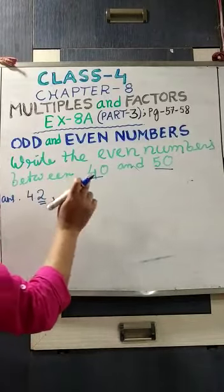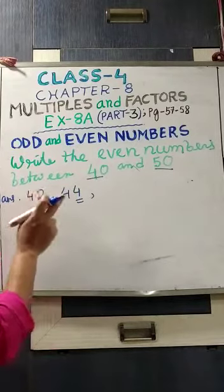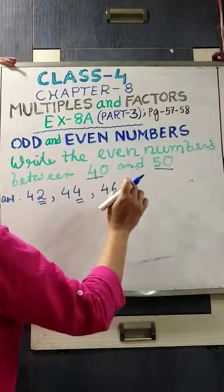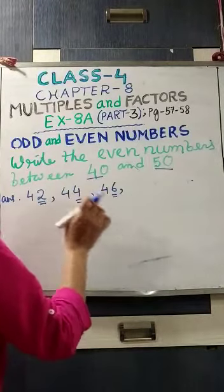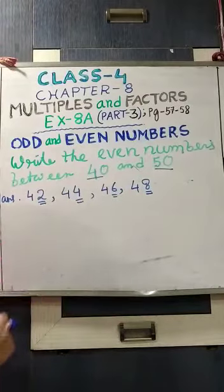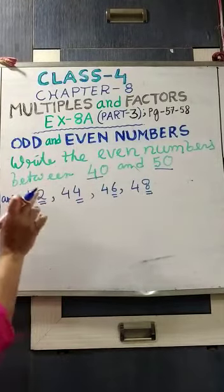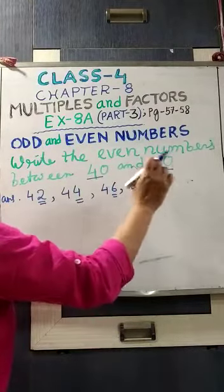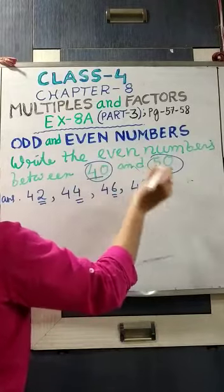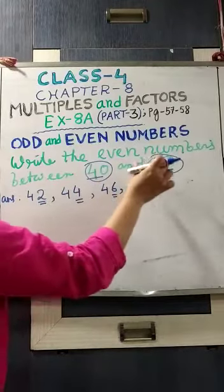Then 45 — 5 is in one's place, an odd digit, we will not take it. Then 46 — 6 is an even digit. Then 47 — we will not take it, it ends with an odd digit 7. Then 48 — 8 is an even digit. Then 49 — one's place is 9, an odd digit, we cannot take 49 as an even number. After 49 comes 50, but we will not take 50 either, as I said we stop before 50. So these are the 4 even numbers between 40 and 50: 42, 44, 46, and 48.